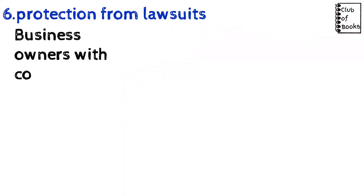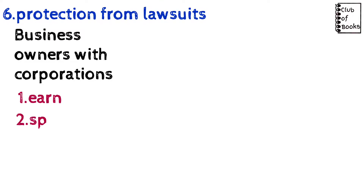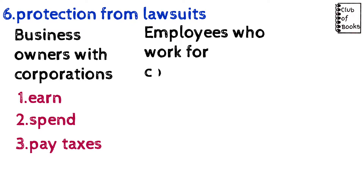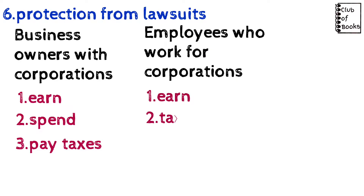The sixth step is protection from lawsuits. Business owners with corporations handle money this way: first they earn, second they spend, third they pay taxes. Whereas employees who work for corporations first earn, second pay taxes, and third spend — that is the order for them.